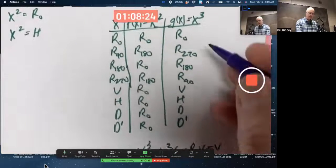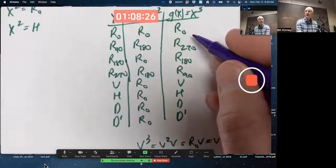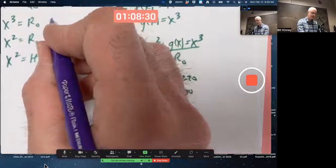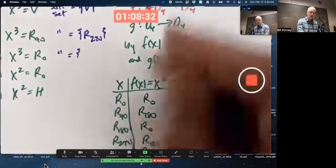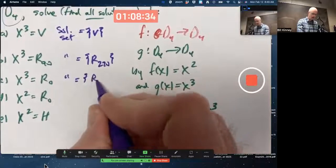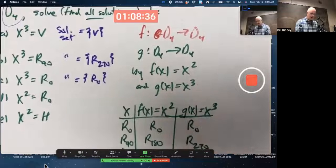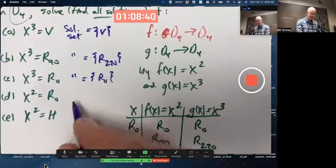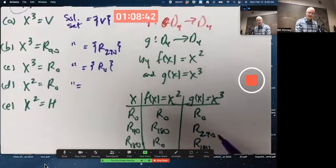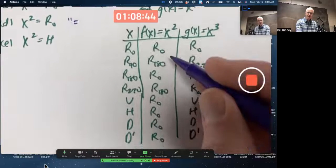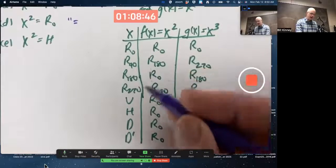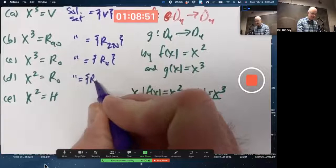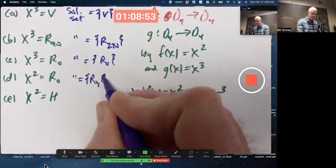Whose cube is R0? Only R0. The solution set is just R0. Whose square is R0? There's more than one solution to that, right? The solution set, there's lots of R0s in the square column corresponding to R0 and then all the flips. The solution set contains five elements.